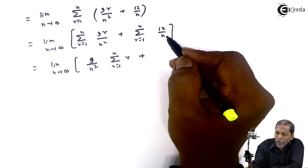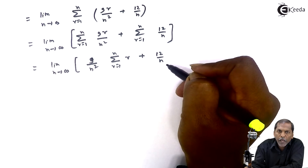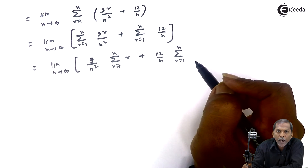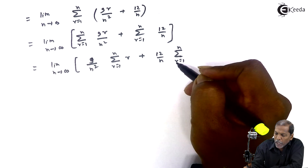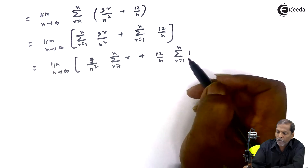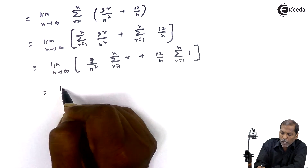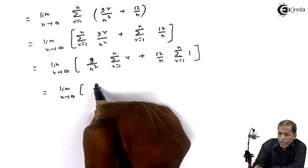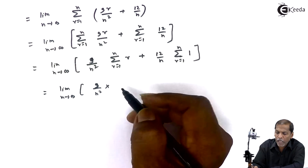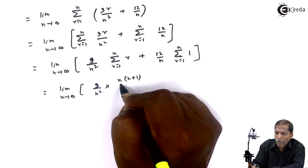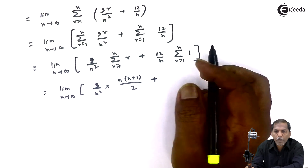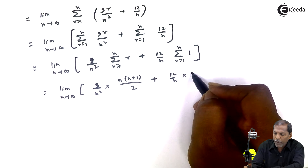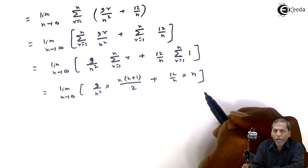Now observe the second term: 12 upon n is a constant term, so we take it outside the summation. Then 9 upon n squared is also constant, so we write: 9 upon n squared into summation r from 1 to n of r, plus 12 upon n into summation r from 1 to n of 1. Using the formula, summation of r equals n(n+1) upon 2, and summation of 1 equals n.